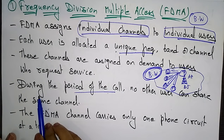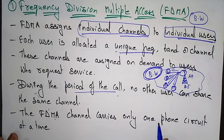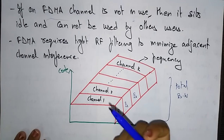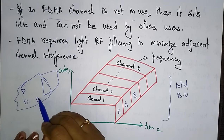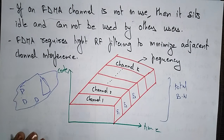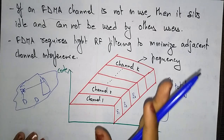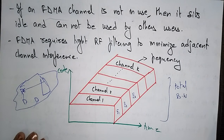An FDMA channel carries only one phone circuit at a time. If an FDMA channel is not in use, it sits idle and cannot be used by other users. The channel is assigned to a specific mobile device, and even if no communication is taking place, it must remain idle until the user disconnects the call.